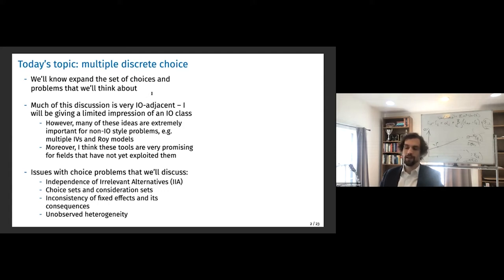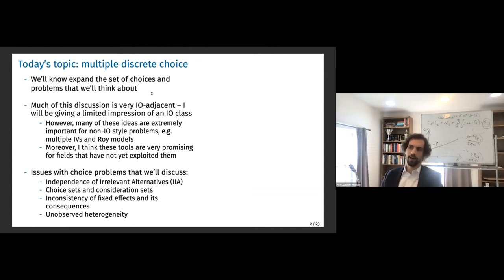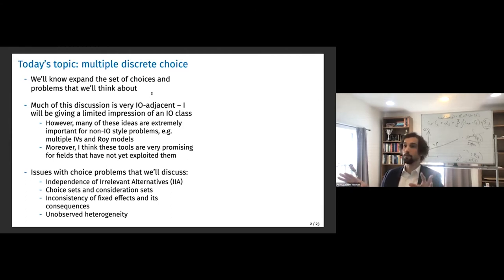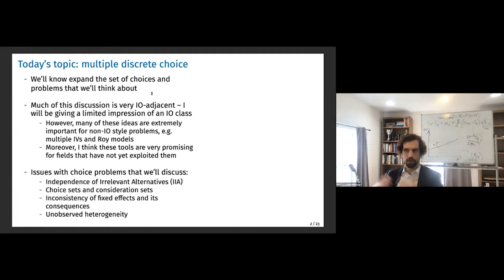Historically these ideas weren't available because the data and computational techniques weren't there, but now we have huge amounts of data and computing power. The ideas from the IO literature are kind of waiting to be unlocked in many other applications. Most of you are not IO people — by selection, since this class meets at the same time as the IO class — so think of this as an opportunity to arbitrage these techniques into your own fields.